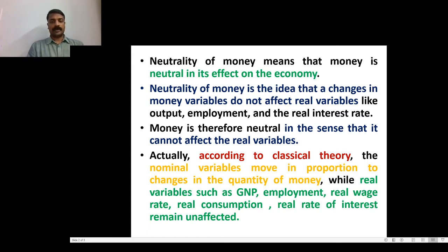So, according to the classicals, they believe money variables move in proportion to changes in the quantity of money, while real variables such as GNP, employment, real wage rate, real consumption, and real rate of interest remain unaffected.